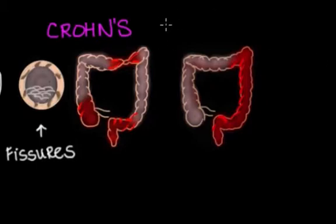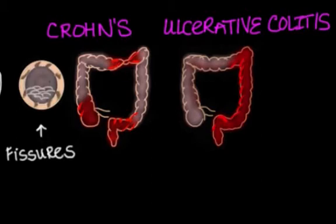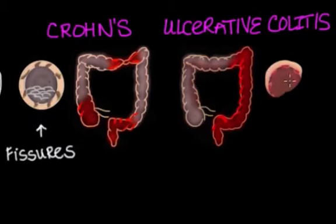Now, ulcerative colitis. On the other hand, this inflammation is usually limited to the colon and rectum. Patches of healthy and diseased bowel are not seen, as previously mentioned with Crohn's. The entire colon is diseased in UC; however, it causes ulceration only in the innermost lining of the large intestine.